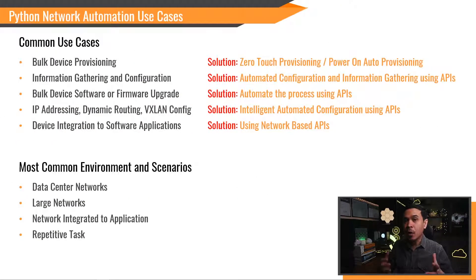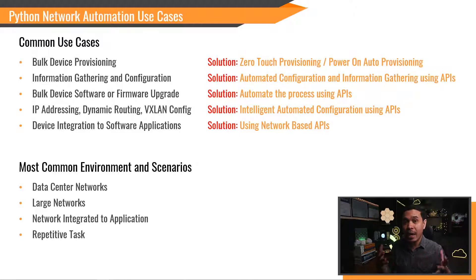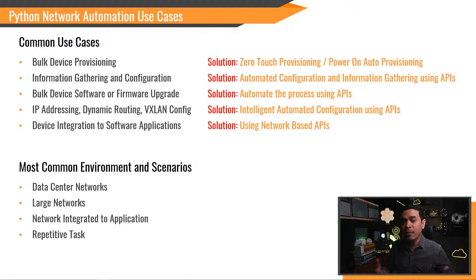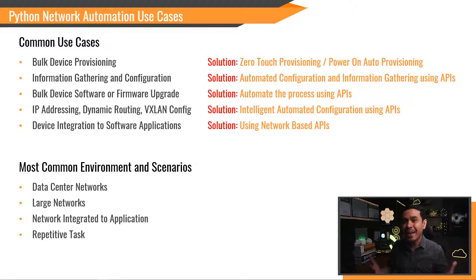Here are the most common use cases. First: bulk device provisioning — solution is ZTP or POAP. Next: information gathering and configuration from multiple devices — automate using network-based APIs. Next: bulk device software or firmware upgrade — again, using APIs. Next: more complex configurations such as IP addressing, dynamic routing, and VXLAN configuration — solution is intelligent automated configuration using network-based APIs. Last: integrating network devices to software applications — again, network-based APIs.